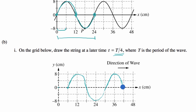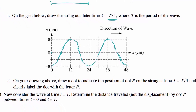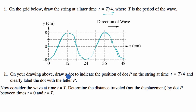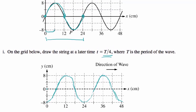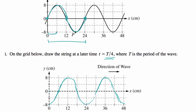The wave looks like that — shifted one-fourth of a wavelength to the right. Now, on the drawing, we draw a dot to indicate the position of point P at time T equals T over 4, and label it P. P was originally at 18 centimeters — halfway between 12 and 24 centimeters. So at T equals T over 4, P is right over here — it has moved from its maximum negative displacement up to the equilibrium position.